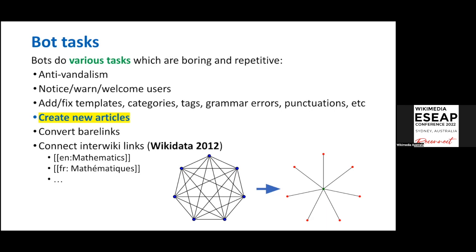I've been on Wikipedia since 2012, so I understand why Wikidata is better. At first, when you wrote an article in English about, for example, mathematics, you had to connect it to other language versions using text with a language code and article name — very complicated. So we developed Wikidata just to add a central hub: we store information in the middle and can connect to all other languages.